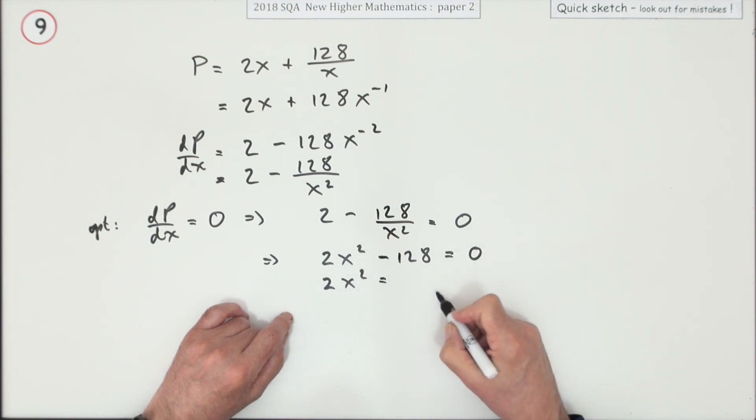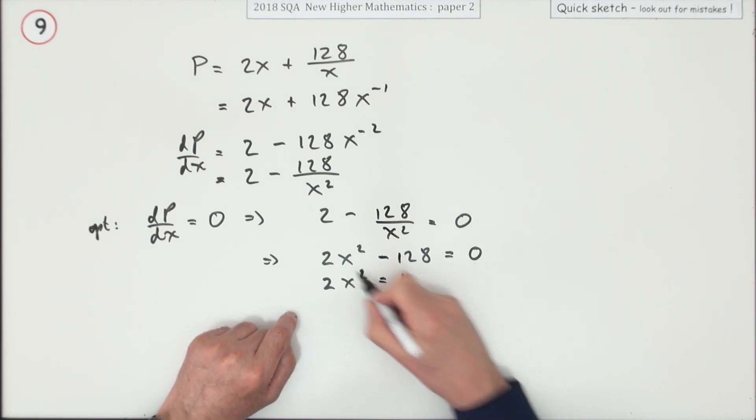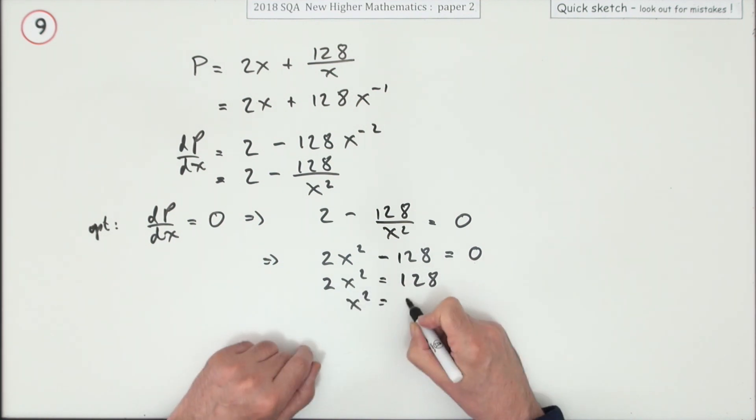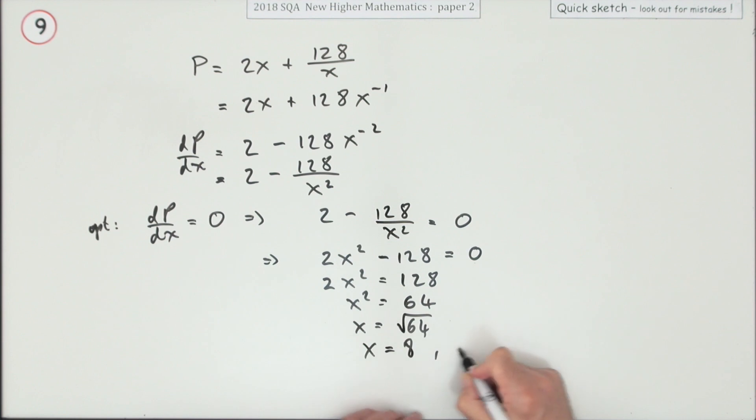So 2x squared, now you could factorize that or you could just, since it's a single mention of x, just take it across. x squared, divide that, gives you there's that 64 back, which means x equals the square root of that, which means x equals 8 because it's a real situation and x has to be greater than zero.